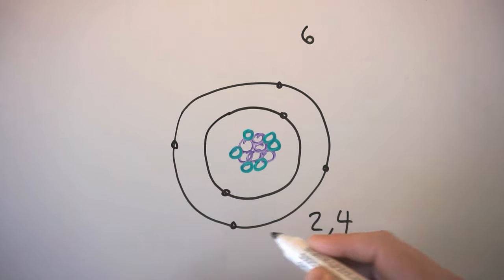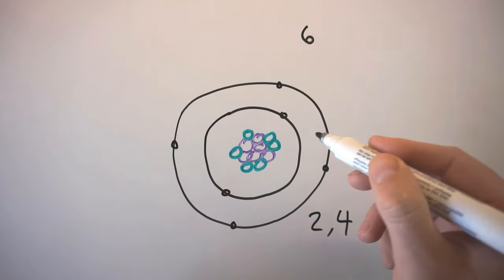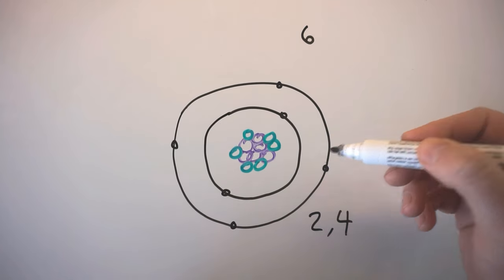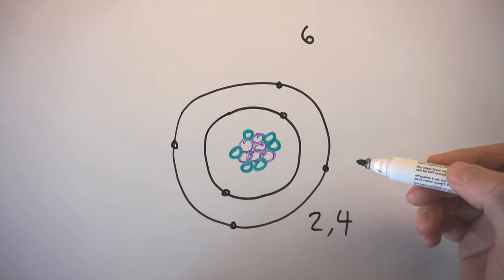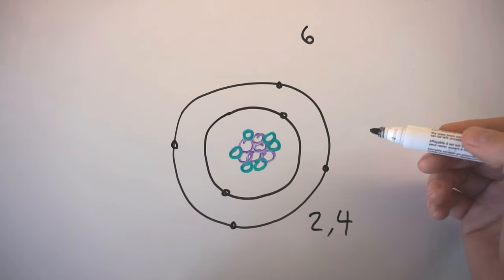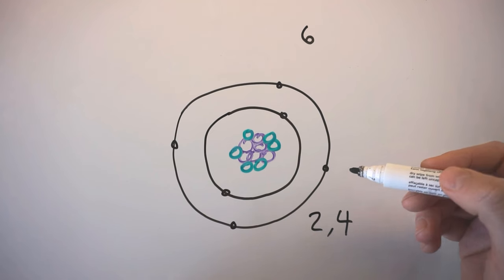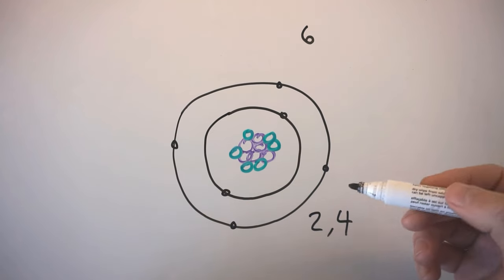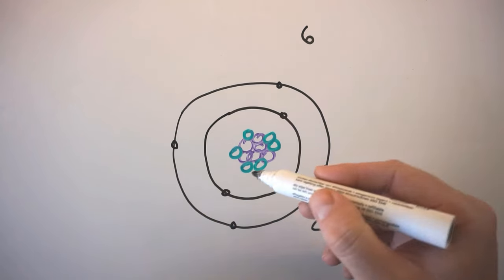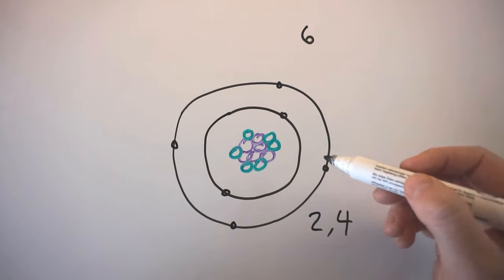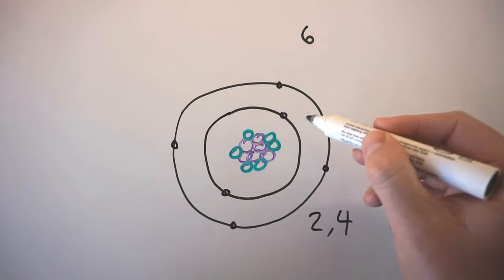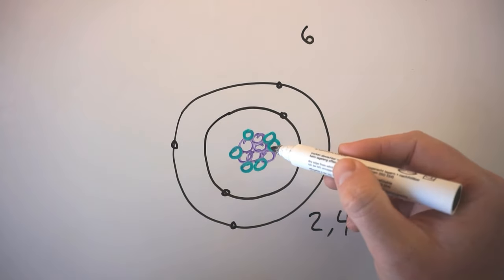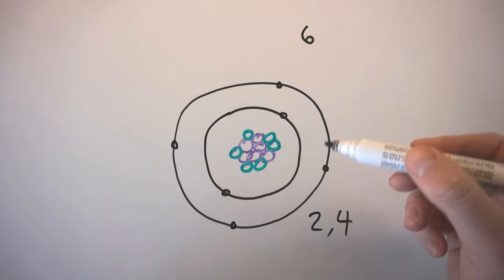This second shell can hold a maximum of eight electrons. Then we start filling up a third shell, which can also hold eight electrons, and then we move on to a fourth shell and so on. So the atoms get bigger by increasing the number of shells, as well as the number of neutrons, protons and electrons.